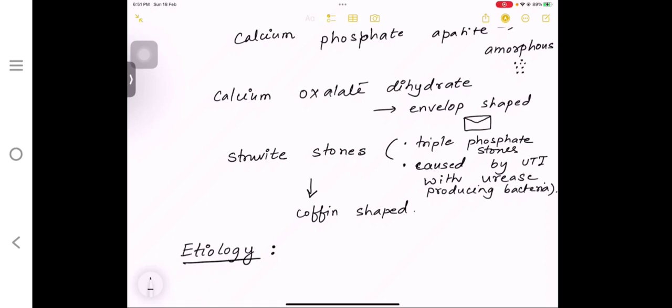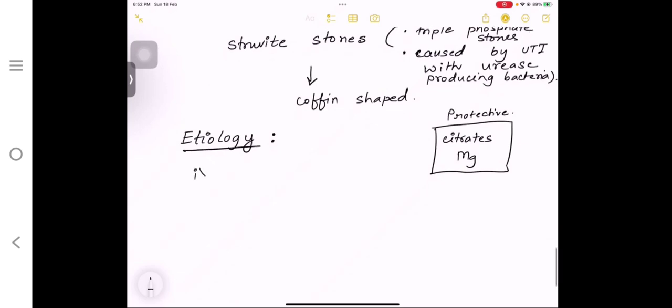Come to the etiology. You have to know what is the etiology of renal stones. Basically, there are some protective factors and there are some risk factors. Protective factors I have already told you—if there is hypercitraturia, hypermagnesuria or there are some mucoproteins, carbohydrates, these are the protective factors.